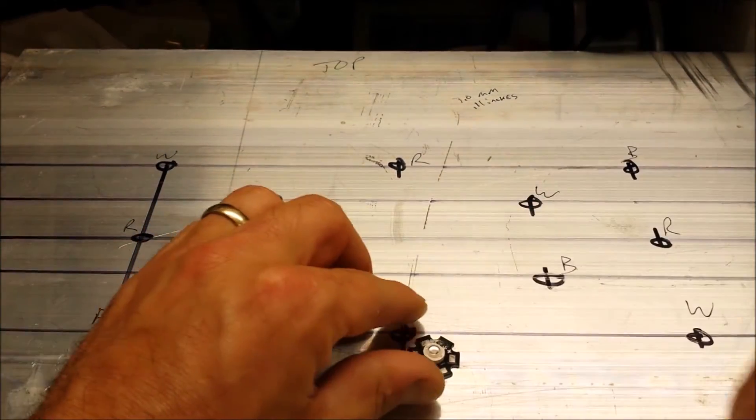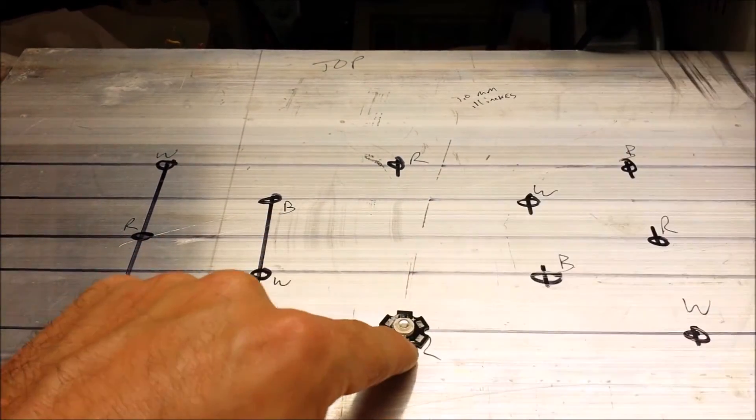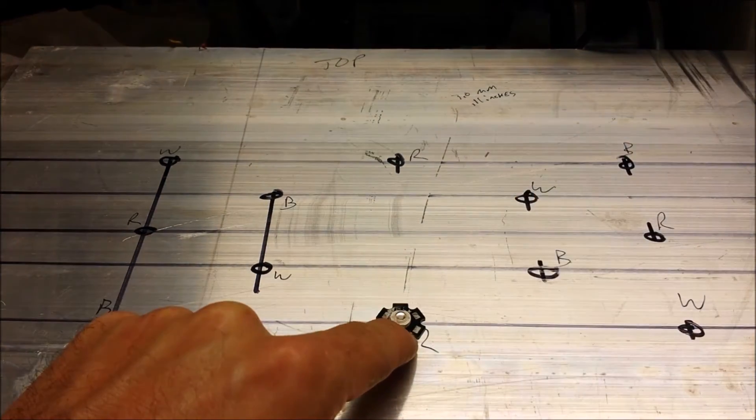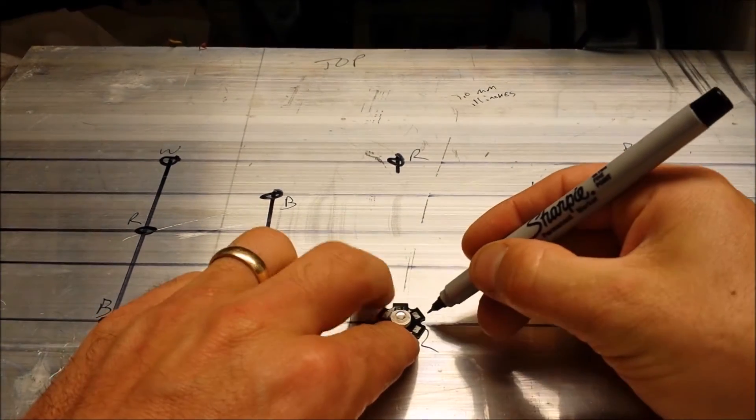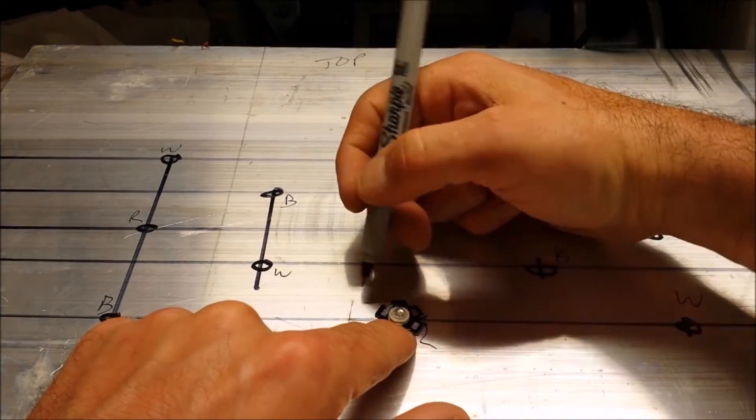So what I do is I'll just take the LED and I'll orientate it so that the spots here are on the line. Then you take a little Sharpie and then what you want to do is just mark out your pattern.